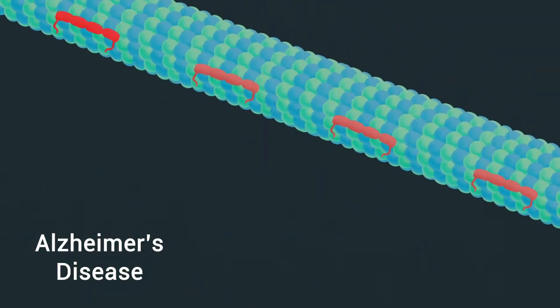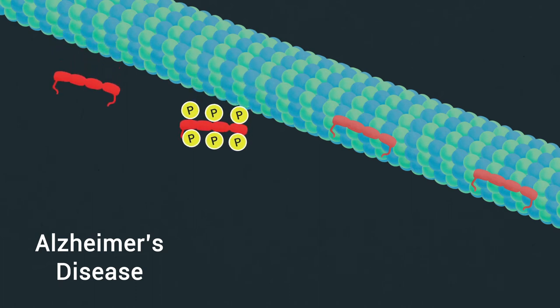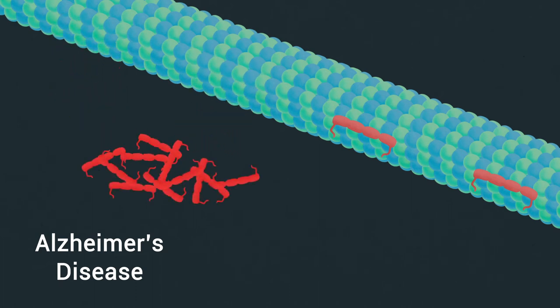develop when mutated or hyperphosphorylated tau loses affinity for microtubules and forms filamentous aggregates called neurofibrillary tangles.